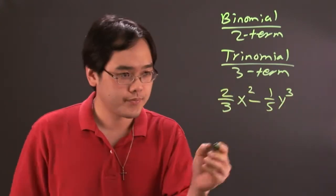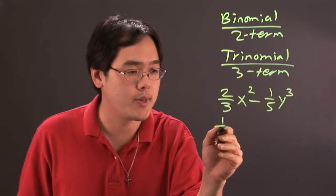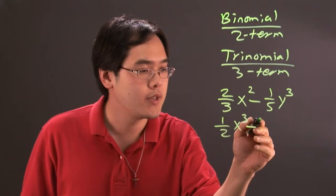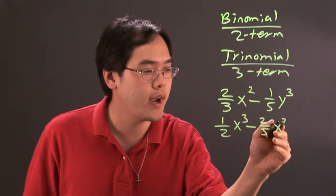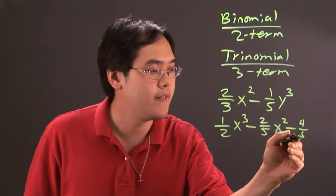And a trinomial would have three terms. With fractions involved, you might have, for example, one-half x cubed minus two-fifths x squared minus four-fifths x.